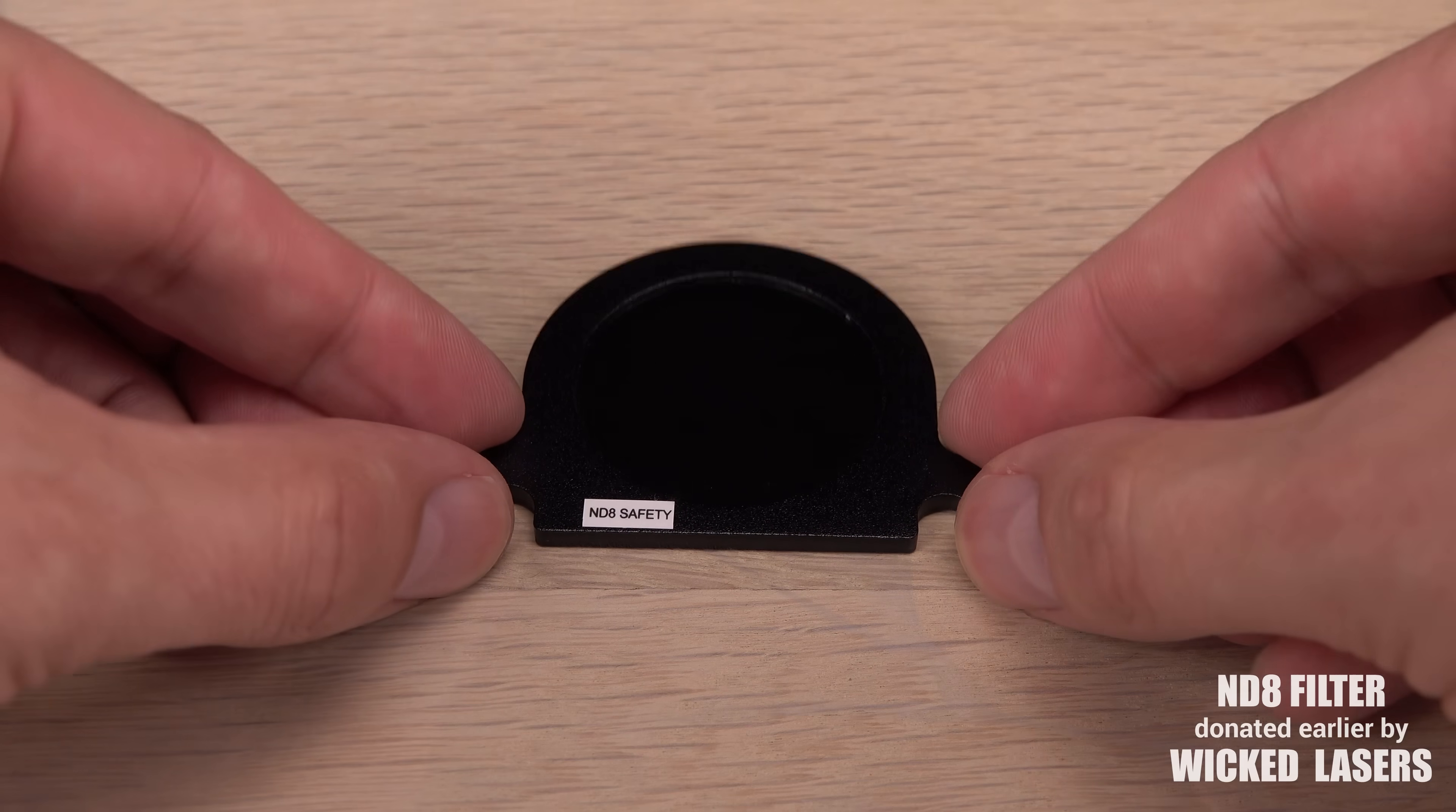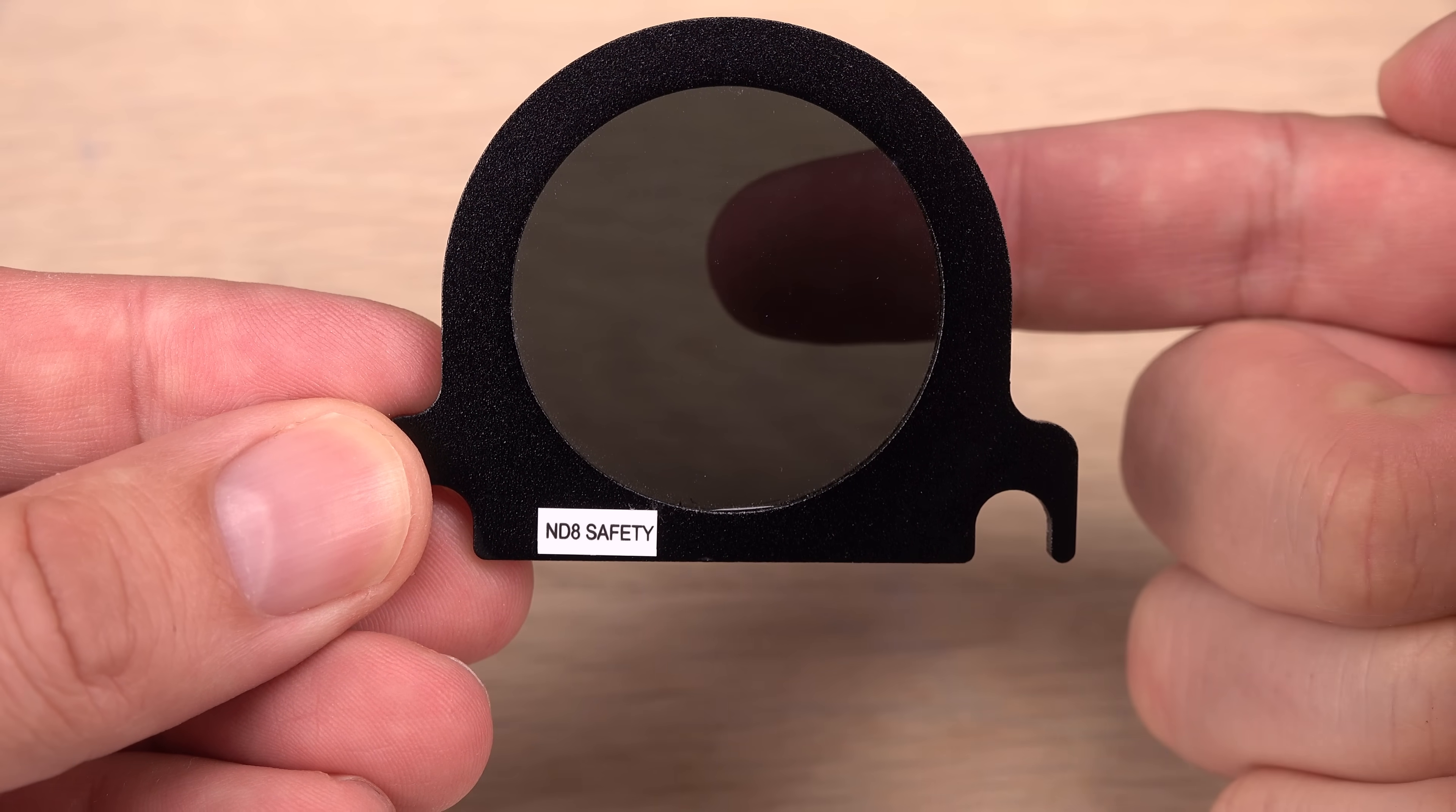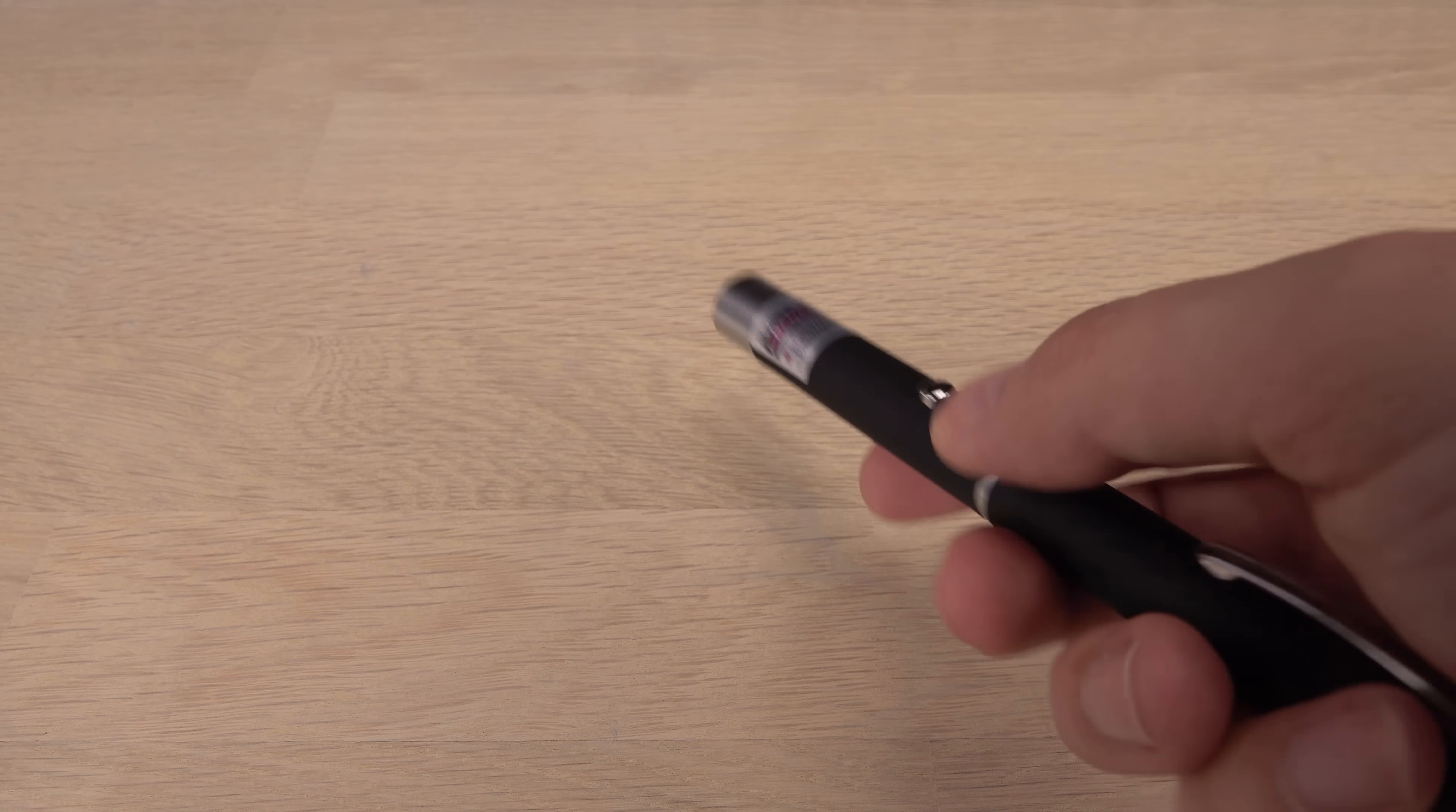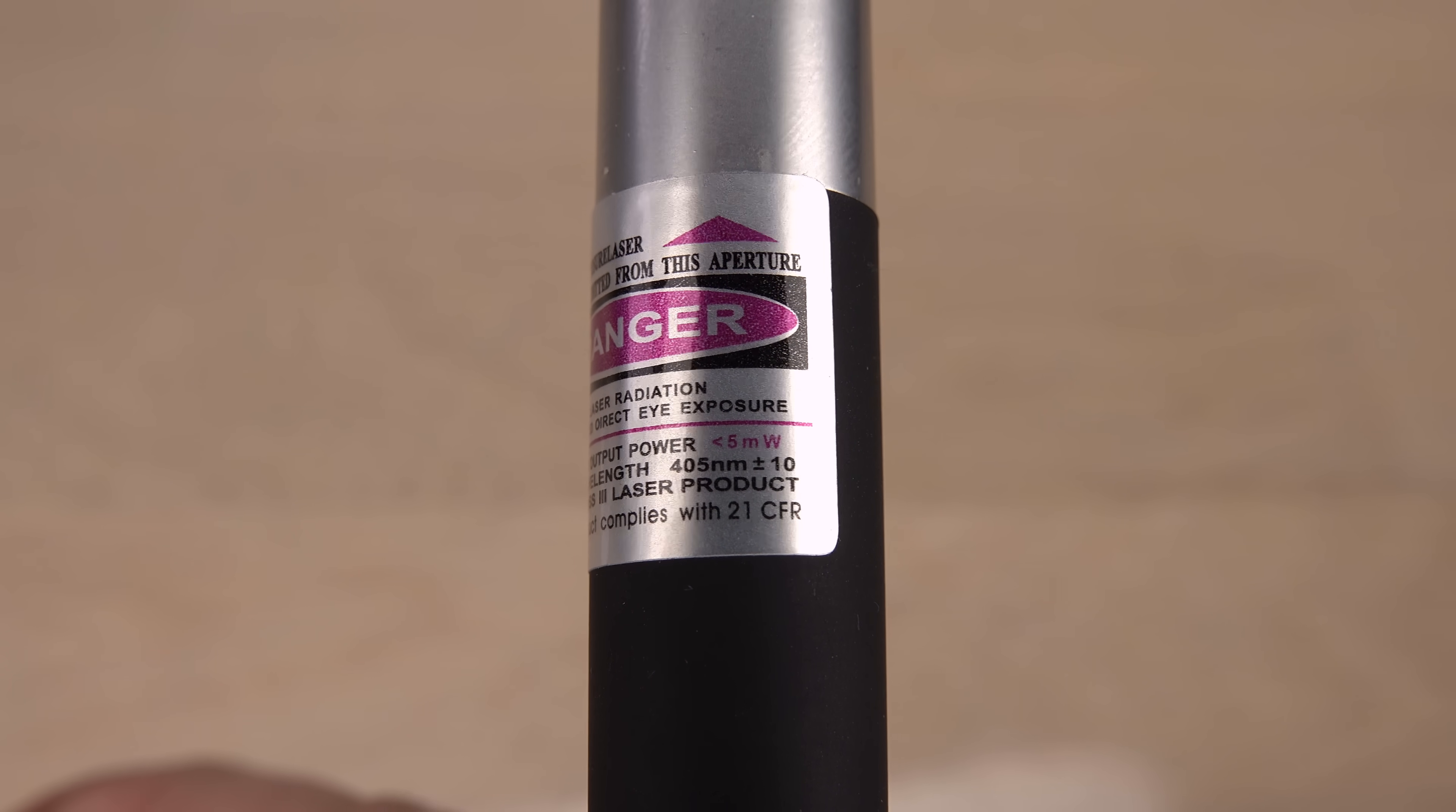Let's get right to it and test the ND filter I used last time. It is labeled ND8 safety, meaning only one-eighth of incoming light should pass through it. To test if it is true, I will use this laser pointer, a violet one labeled to have an output below 5 milliwatts. That's a relatively eye-safe power in class 3A. Though the label just says class 3, a bit sus, since only class 3A and 3B exist.